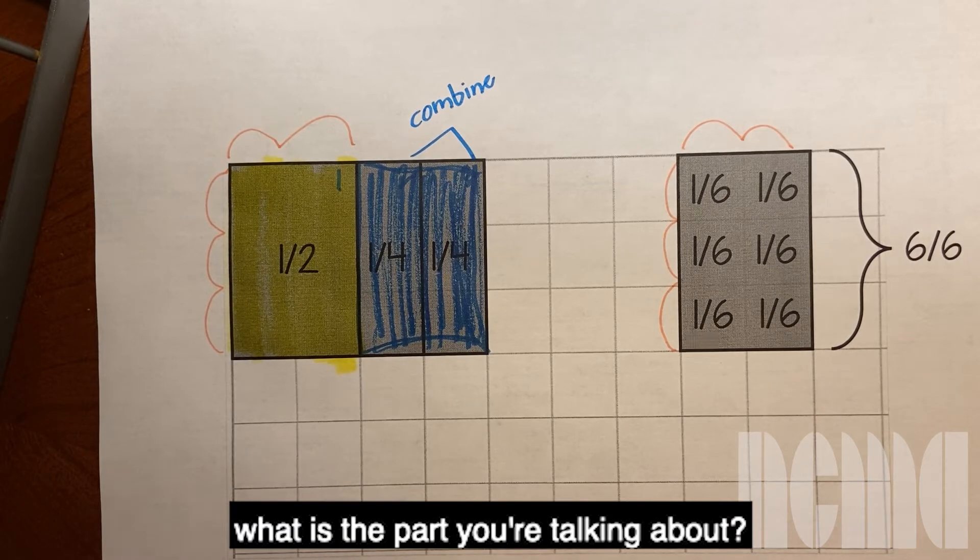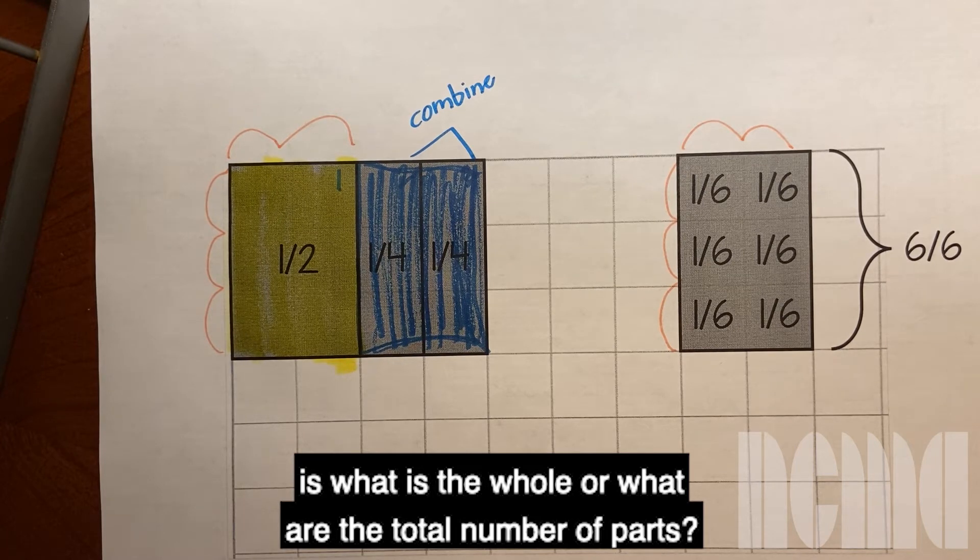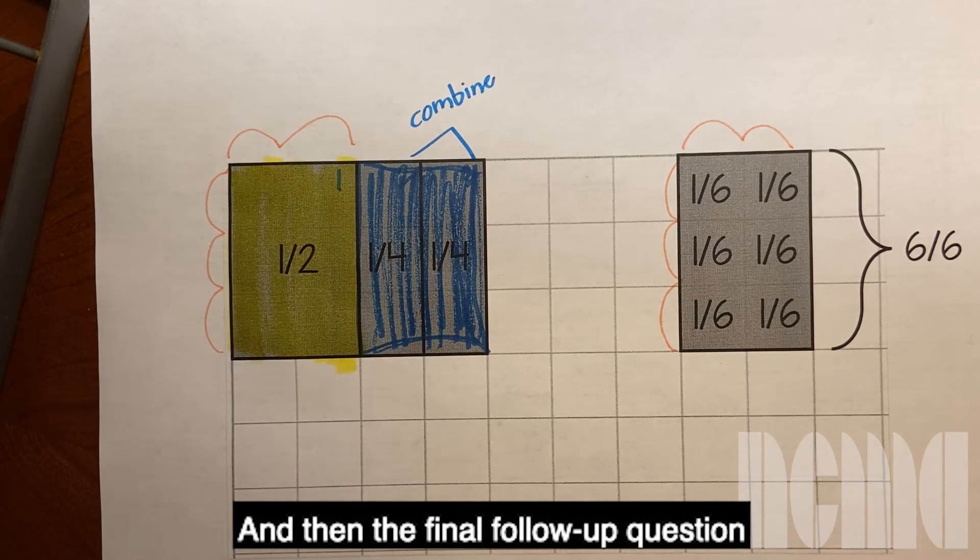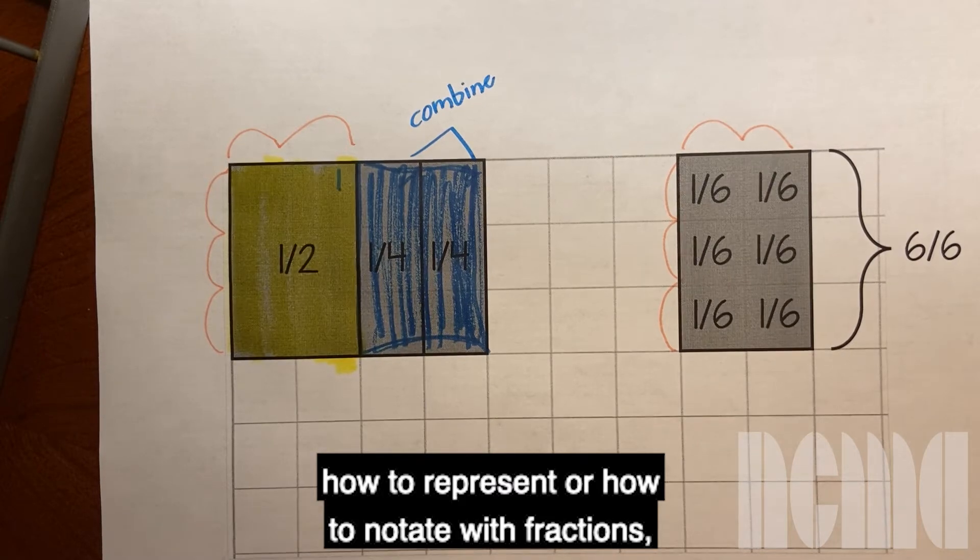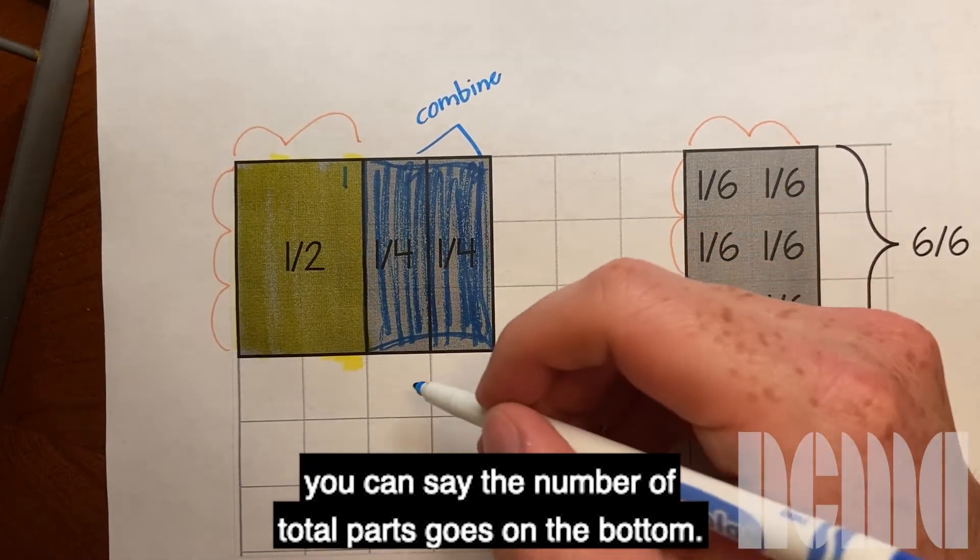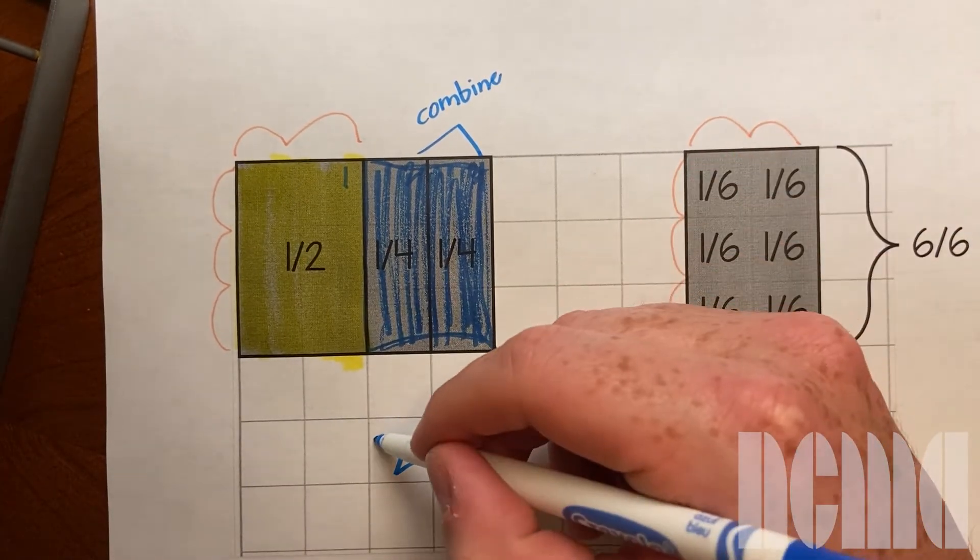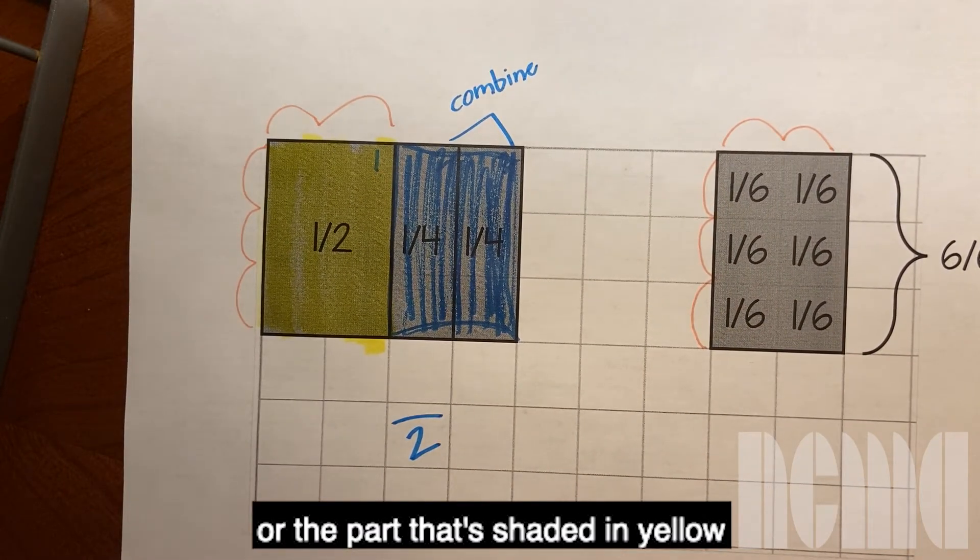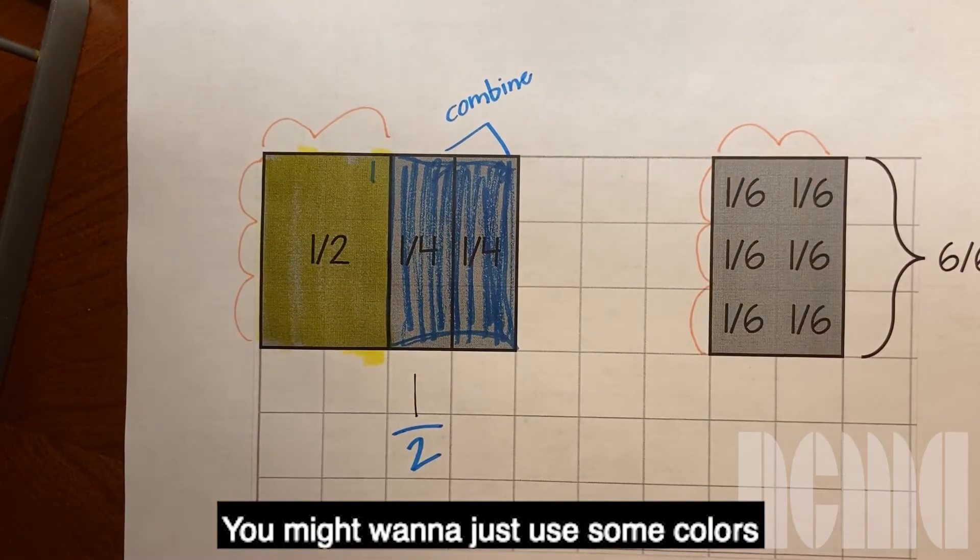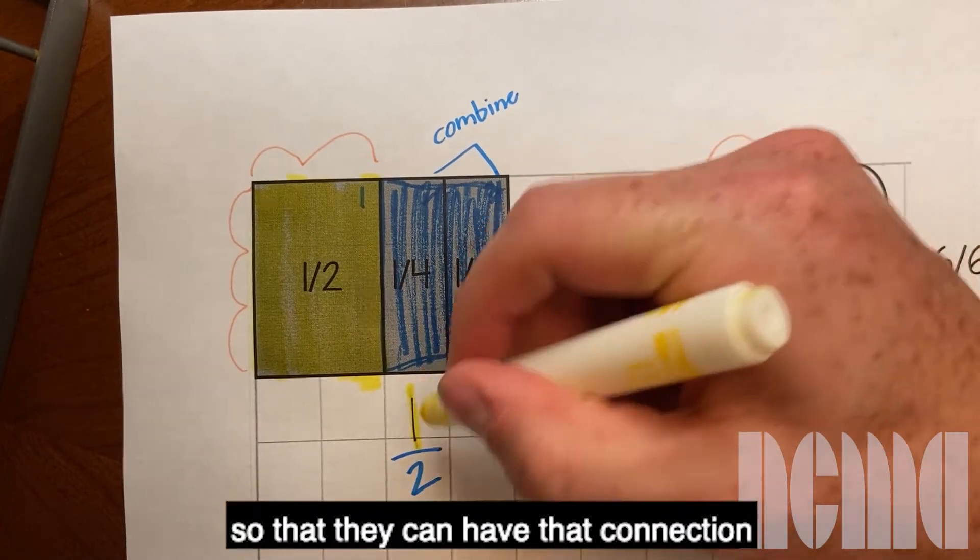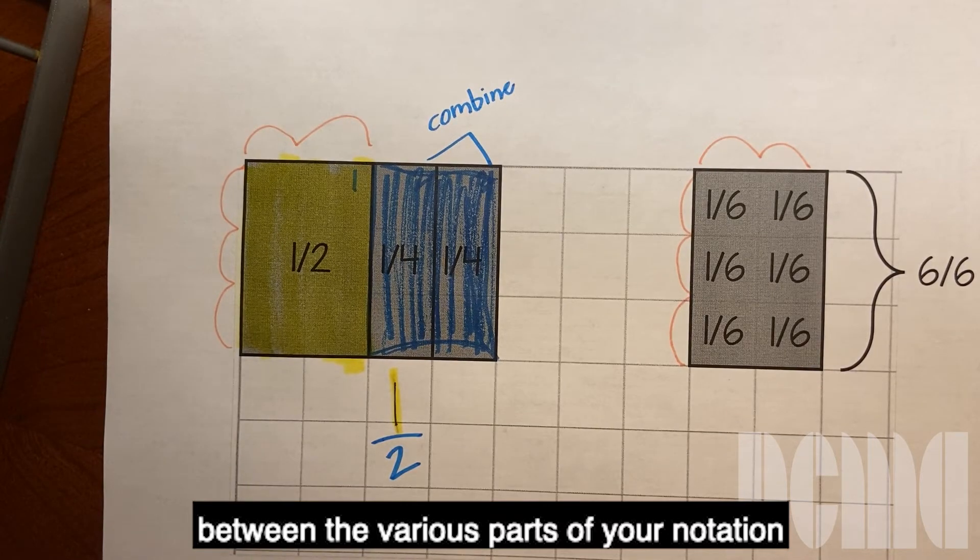So first question you're asking what is the part you're talking about, the second question you're asking is what is the whole or what are the total number of parts, and then the final follow-up question that you don't even need to emphasize but if you do want to emphasize how to notate with fractions you can say the number of total parts goes on the bottom that's two because there's two parts. The part that we're talking about or the part that's shaded in yellow is the number that goes on top. I'm going to write that in black so that you can see it.